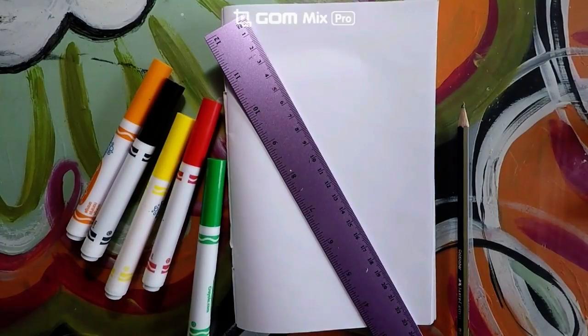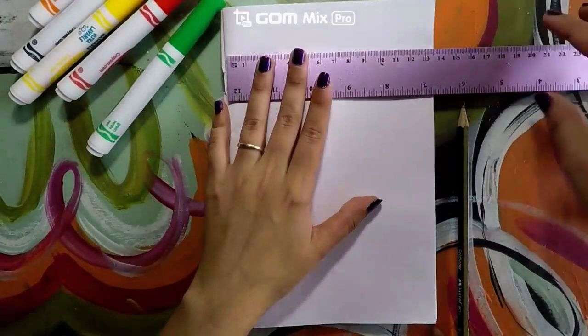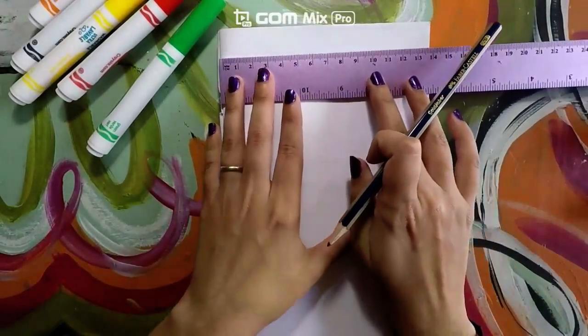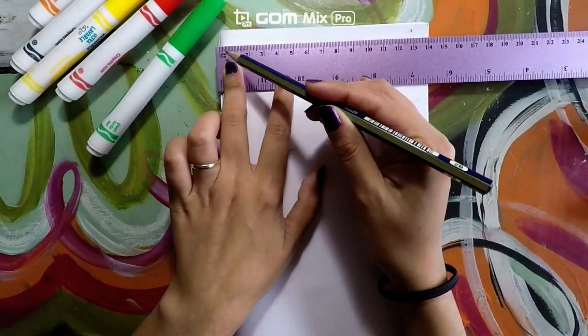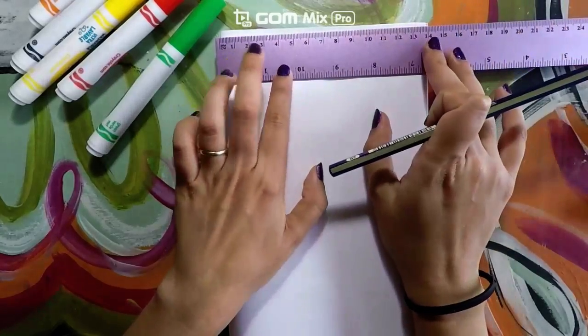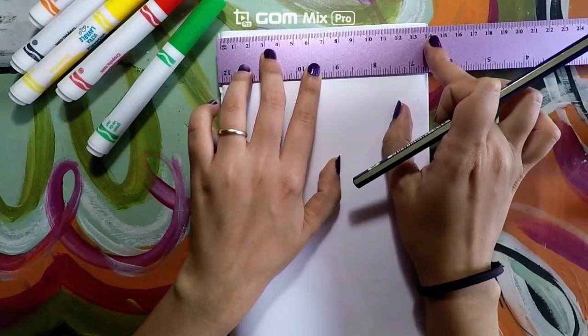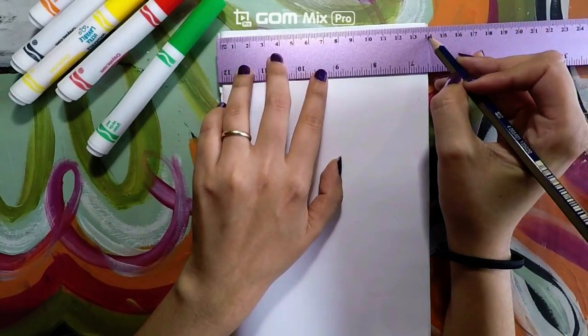Go ahead and grab your ruler and we are actually going to measure. Place your ruler on the centimeter side, which is the cm at the top. And go ahead and see your paper at the top just like this. Mine measures about 14 centimeters.